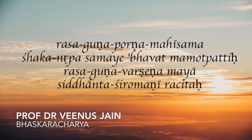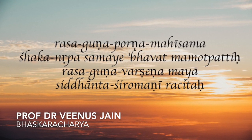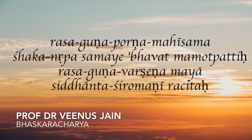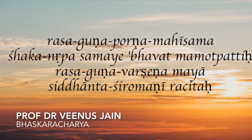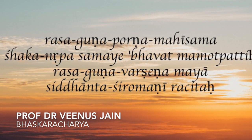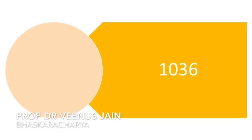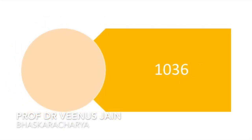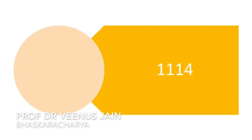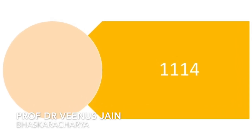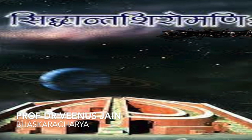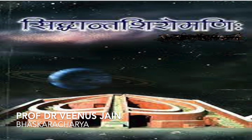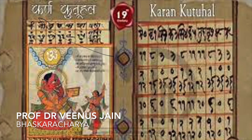The Sanskrit verse reads: 'Ras gun poon mahi sama shak nrip samay bhavat mamot patthi ras gun varshen maya siddhant shiromani rajitaha.' This reveals that he was born in 1036 of the Shak era, that is 1114 CE, and that he composed the Siddhant Shiromani when he was 36 years old. He also wrote another work called the Karan Kautuhal when he was 69 years old, in 1183 CE.